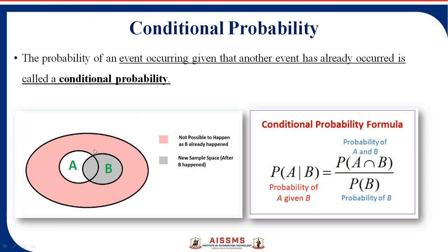See here — there is a universal state shown. In this universal state there are two events, A and B. Event A has already occurred at the time of B — this is called conditional probability. If event A has occurred, then event B occurs. The formula for conditional probability is: probability of A given B equals probability of A intersection B divided by probability of B.